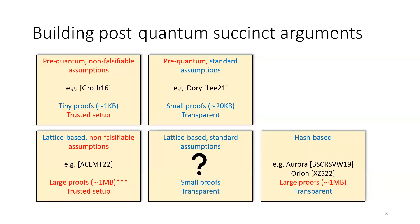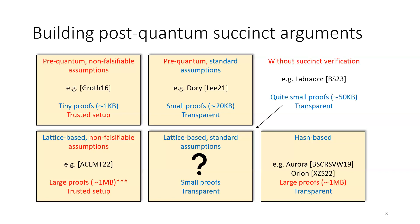Our goal is to produce a lattice-based succinct argument with a transparent setup based on standard assumptions. There is progress in this direction — Labrador, another paper presented earlier this week, gets proof sizes of about 50 kilobytes, but unfortunately this work doesn't have succinct verification yet. What's different about these arguments is they use homomorphic cryptography, so homomorphic commitments.